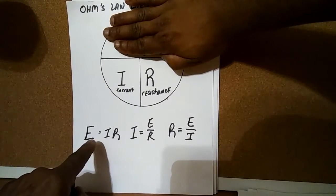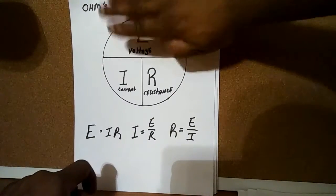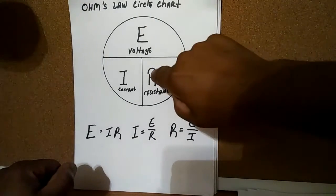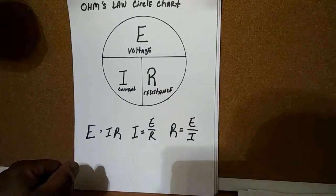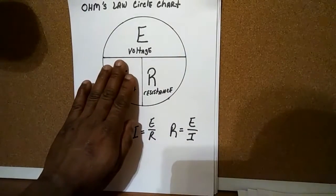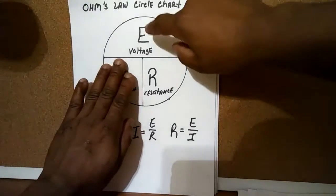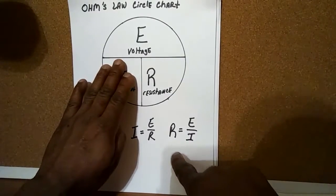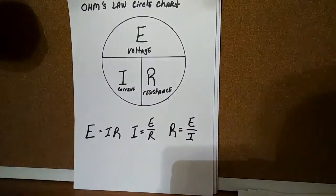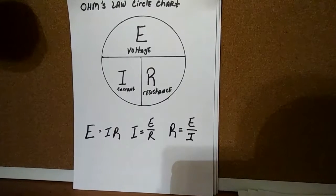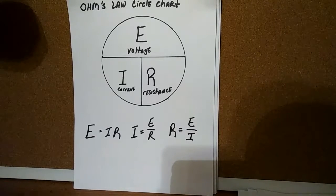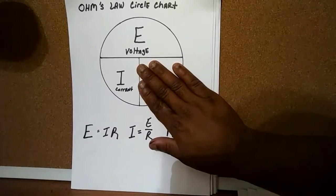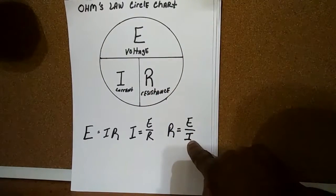When you cover E, what you have is I next to R, which is I times R — the formula E equals I times R. Now if you were given a value of E and a value of R and your unknown was I, you would cover I and it leaves you with E over R. And if your unknown was R and you were given E and I, you cover R and it leaves you with E over I.